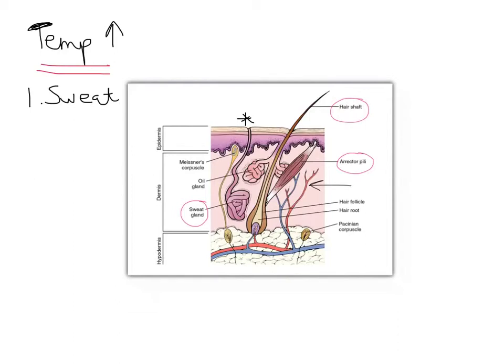Now in an exam, that wouldn't get you any marks. The next bit would. It's what happens to that sweat. When the sweat evaporates from the skin, it carries the heat energy away with it. So the sweat gland will produce sweat. It will be released onto the surface of the skin. And then it will evaporate, carrying that heat energy away.